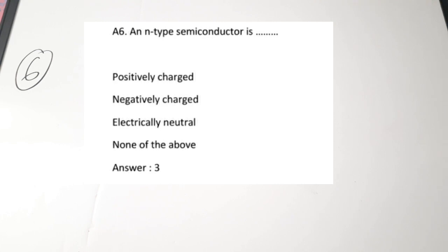The sixth question: an N-type semiconductor is dash — positively charged, negatively charged, electrically neutral, or none of the above. We are talking about an N-type semiconductor crystal. A crystal, if you take, is actually electrically neutral. Many people have a tendency to write negatively charged because the question mentions N-type, but the N-type semiconductor crystal is electrically neutral — there are plenty of electrons, but the crystal structure overall is electrically neutral. Correct answer is 3.